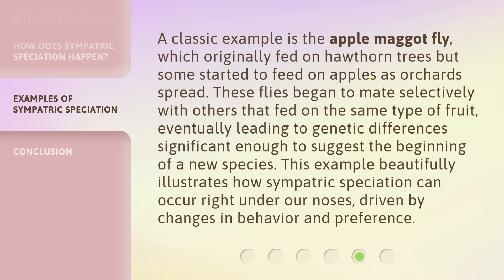A classic example is the apple maggot fly, which originally fed on hawthorn trees but some started to feed on apples as orchards spread. These flies began to mate selectively with others that fed on the same type of fruit, eventually leading to genetic differences significant enough to suggest the beginning of a new species. This example beautifully illustrates how Sympatric Speciation can occur right under our noses, driven by changes in behavior and preference.